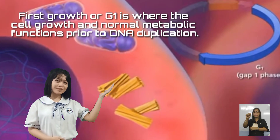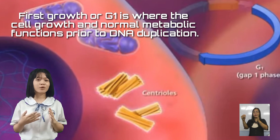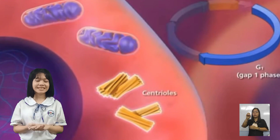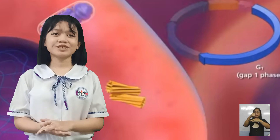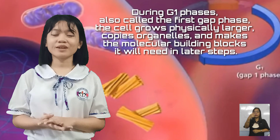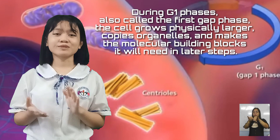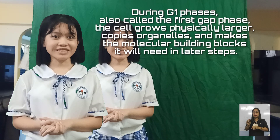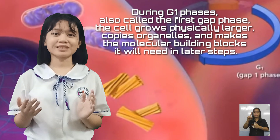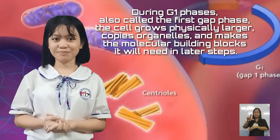First, growth or G1, is where the cell grows and performs normal metabolic functions by DNA duplication. During the G1 phase, also called the first gap phase, the cell grows physically larger, copies organelles, and makes the molecular building blocks that will be needed in later steps.